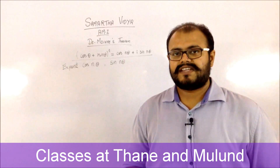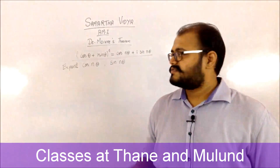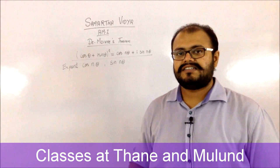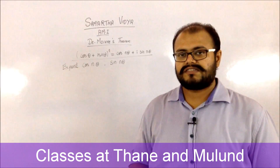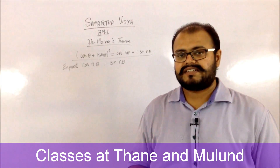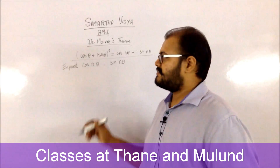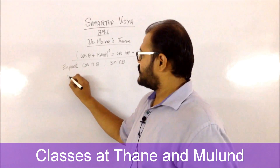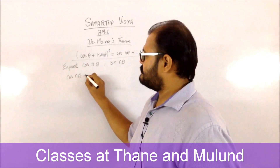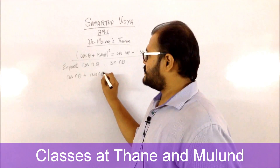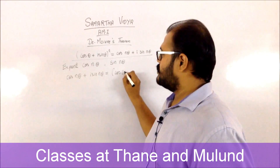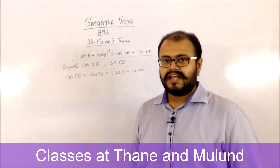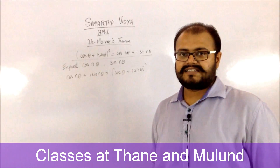One application of De Moivre's theorem is the expansion of cos(nθ) or sin(nθ) in terms of powers of cos or powers of sin. To do this, you write the theorem in reverse: cos(nθ) + i sin(nθ) = (cos θ + i sin θ) raised to n, and then apply the binomial expansion to the right-hand side.